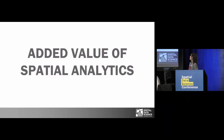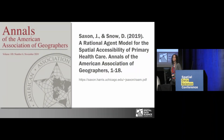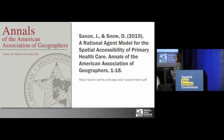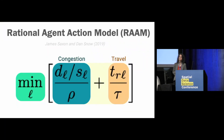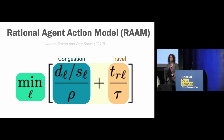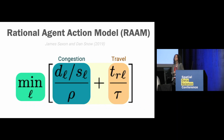The spatial analytics we're implementing in the package address these problems. They're summarized in a paper by Jamie and Dan, and this includes not only the classic floating catchment area models and access scores, but also a new model that Jamie developed called the Rational Agent Access Model, or RAM. What this does is assign a single access score to each point of origin that indicates how accessible that location is to the amenities of interest, minimizing the cost of access. That cost of access has two components.